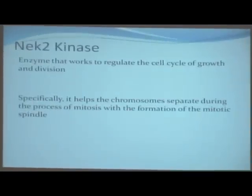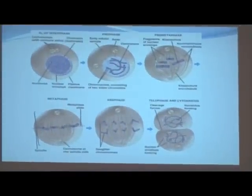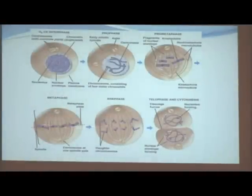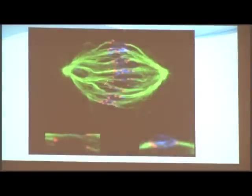So how do we connect the chains we're making to the actual enzyme, specifically NAK2 kinase? This enzyme works to regulate cell growth and cell division. When the chromosomes separate during mitosis, it helps the spindle form — the spindle is the structure that makes sure chromosomes separate to opposite sides. Right here, between metaphase and anaphase, you can see the actual spindle being formed — this is where NAK2 kinase works. This is also a more realistic picture of the process of mitosis.